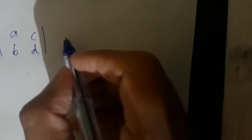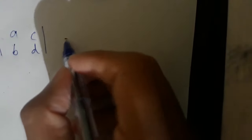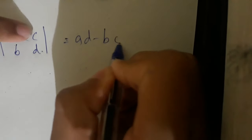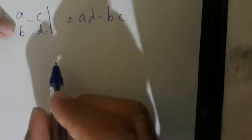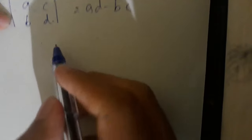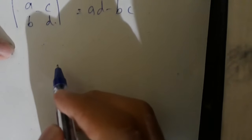We have a matrix and a determinant. We have a matrix called a, b, c, d and a determinant called a, b, c, d. What is the difference between a matrix and a determinant?